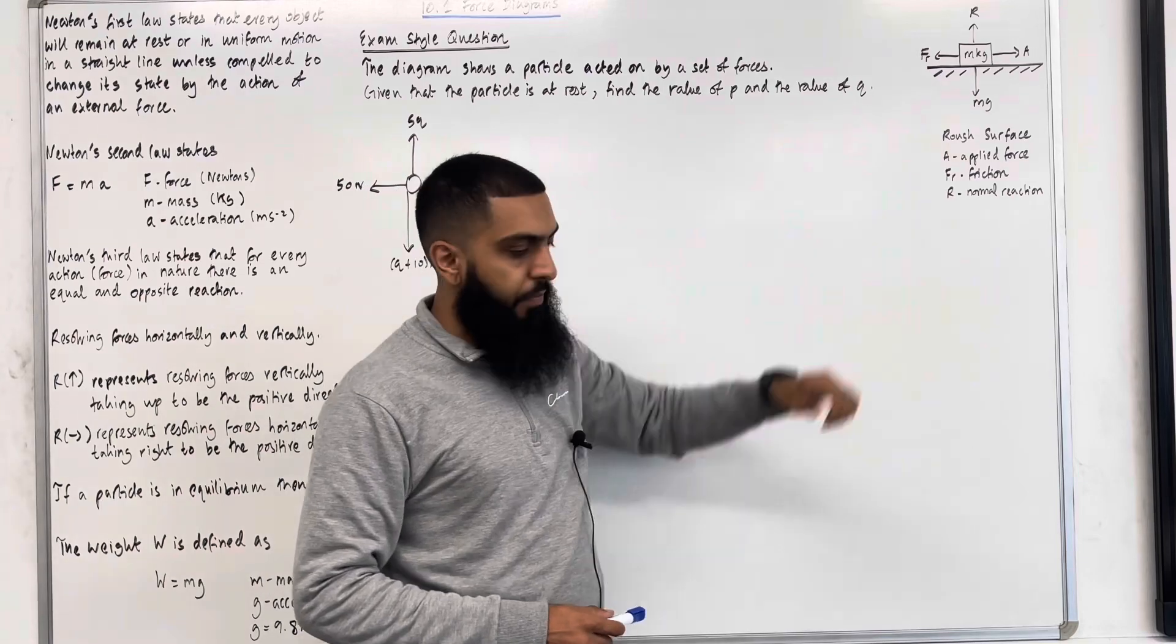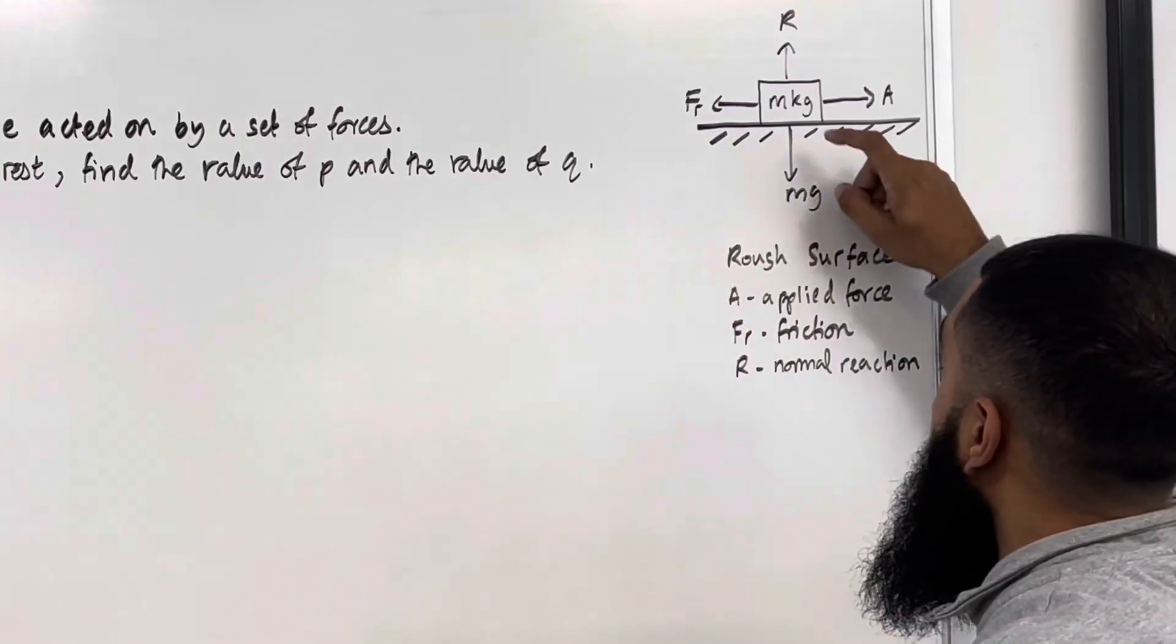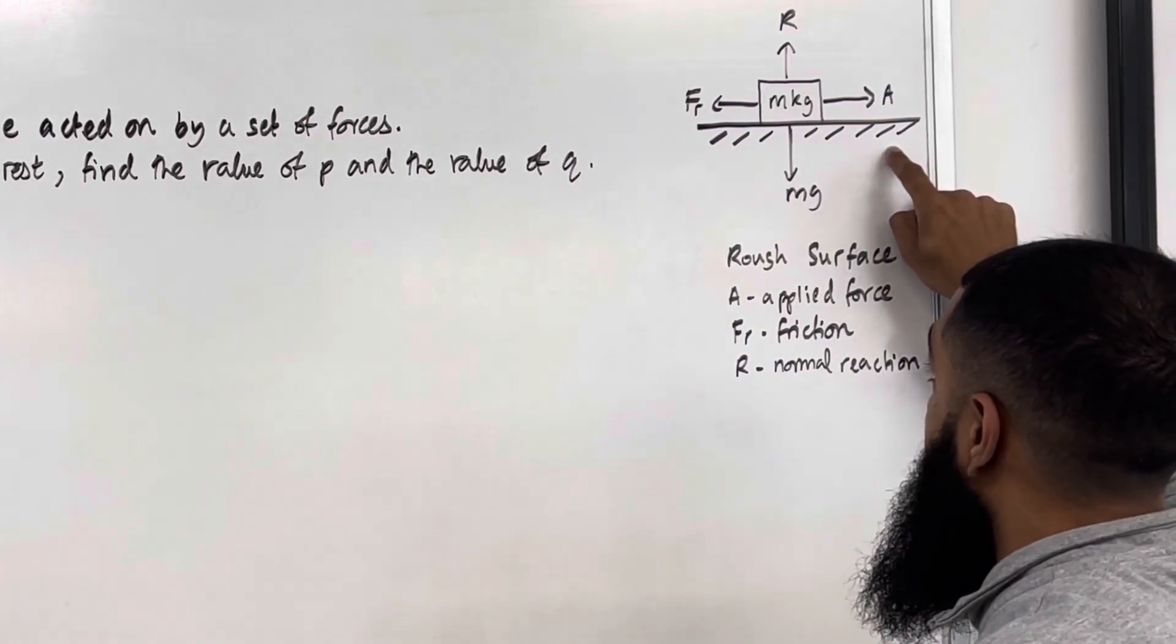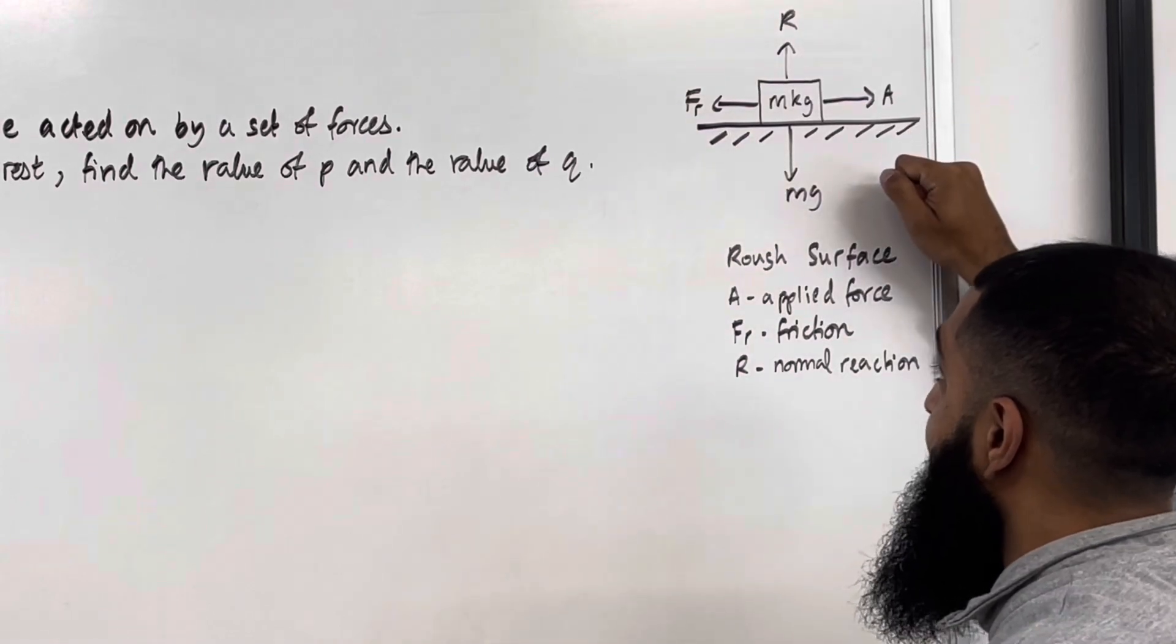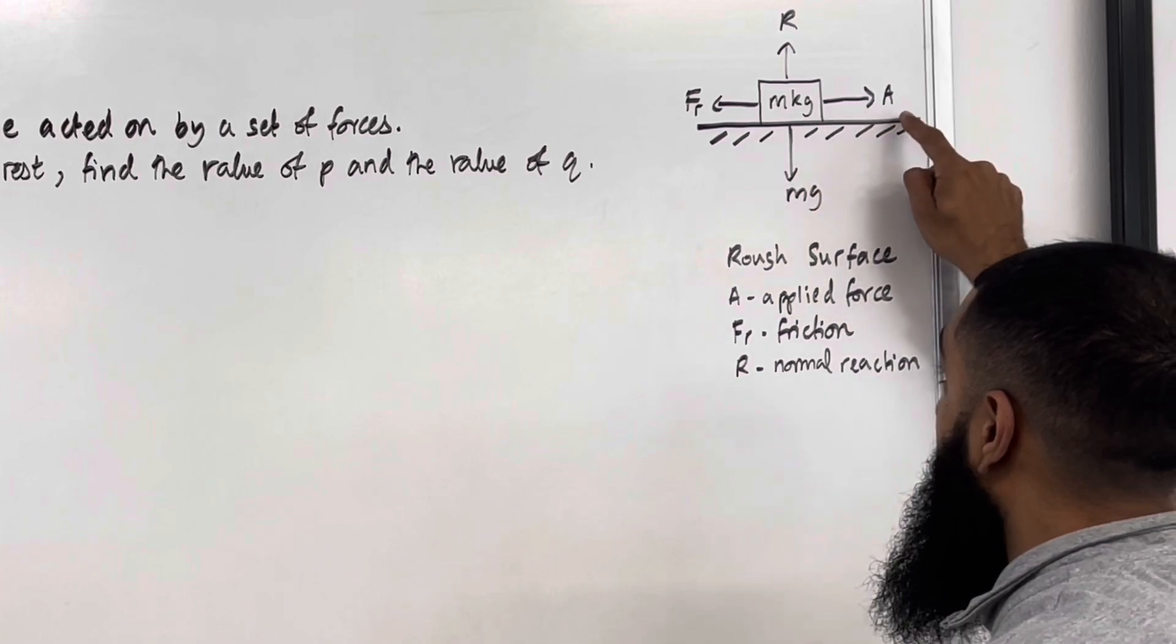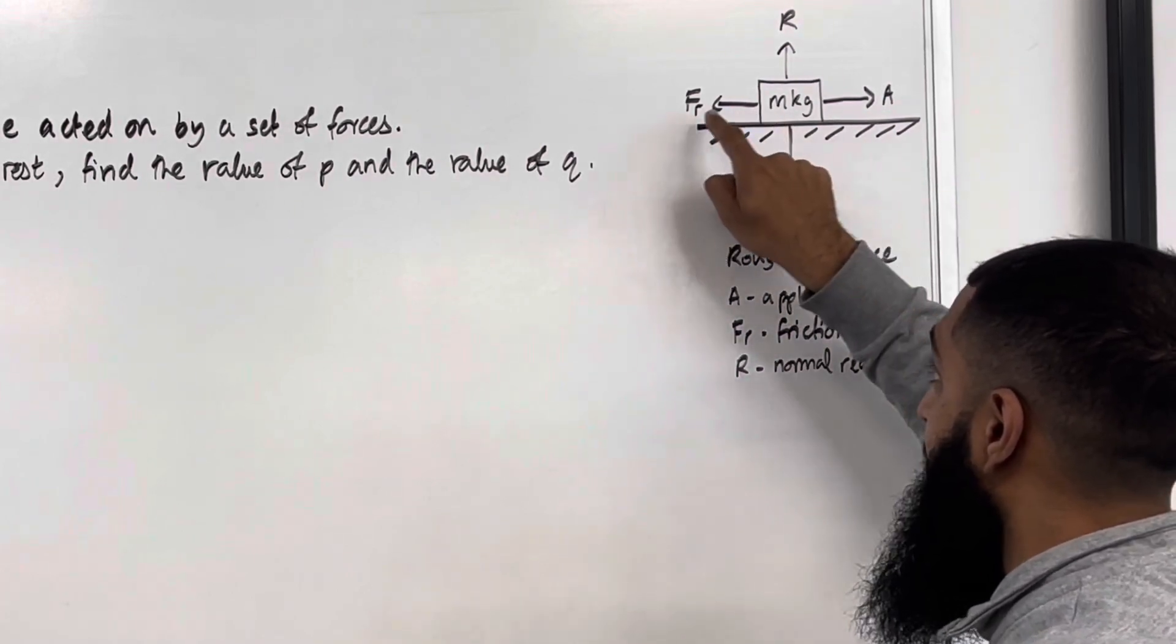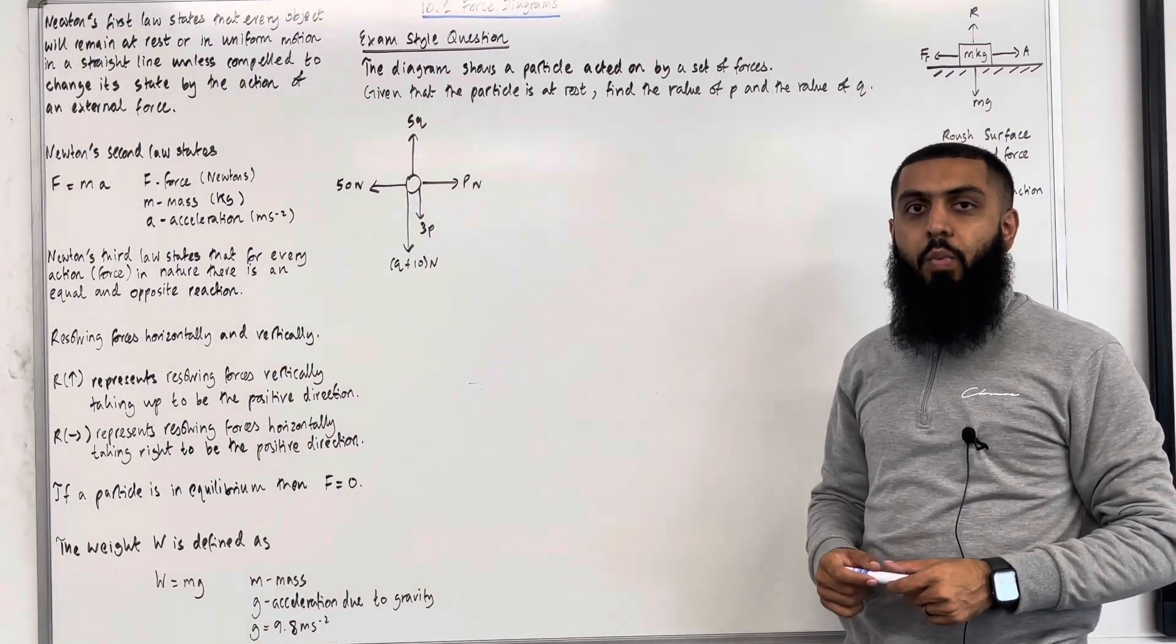Let's have a look at this force diagram. So what we have here is a rough surface. The particle is in contact with the rough surface. The rough surface exerts a normal reaction R acting vertically upwards. The weight acts vertically downwards given by Mg. A is the applied force acting to the right. Because we have a rough surface, we have a resistive force acting to the left and we call this friction. These are the key facts of 10.1 force diagrams.